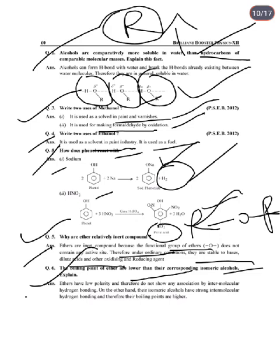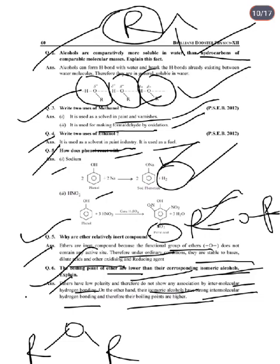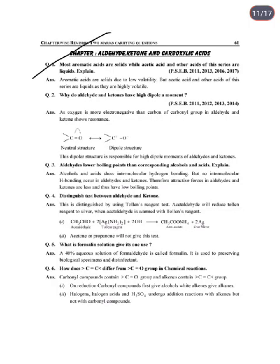Next: Why are the boiling points of ethers lower than those of corresponding isomeric alcohols? Ethers have very low polarity and do not show any association by intermolecular hydrogen bonding. On the other hand, their isomeric alcohols have strong intermolecular hydrogen bonding. Therefore, the boiling points of alcohols are higher than those of corresponding ethers.